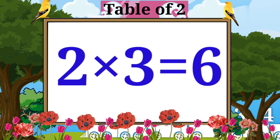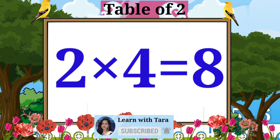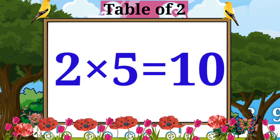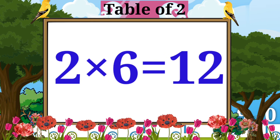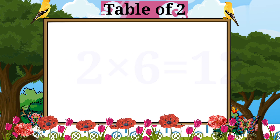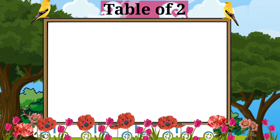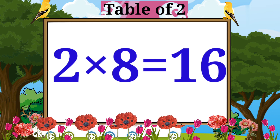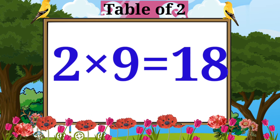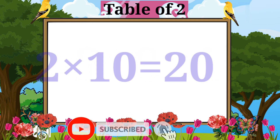Two fours are eight. Two fives are ten. Two sixes are twelve. Two sevens are fourteen. Two eights are sixteen. Two nines are eighteen. Two tens are twenty.